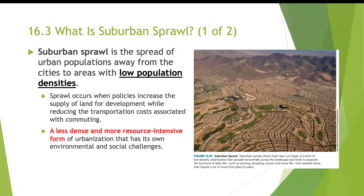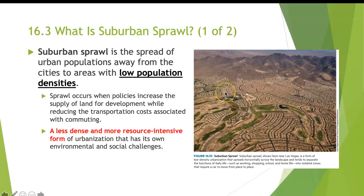Now let's switch gears to talk about suburban sprawl — the spread of urban population away from cities to areas with low population densities. It is a less dense and more resource-intensive form of urbanization that has its own environmental and social challenges. In these areas the population is fairly low, and it has notable characteristics in terms of transportation and environmental pollution.